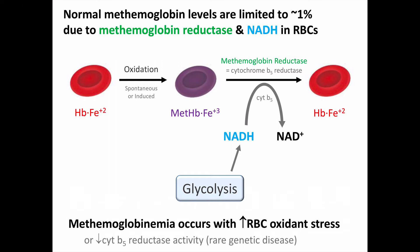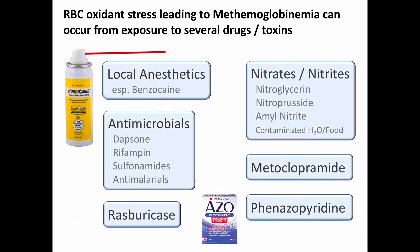If this process normally limits methemoglobin levels to 1%, how do we get higher levels? Most typically, methemoglobinemia is caused by increased oxidant stress, such that the formation of methemoglobin outstrips our ability to reduce it back. It's also possible to have a genetic deficiency of cytochrome B5 reductase, but this is quite rare. The RBC oxidant stress most often occurs with exposure to certain drugs or toxins: local anesthetics, particularly benzocaine; various nitrates and nitrites; certain antimicrobial drugs; the anti-nausea drug metoclopramide (Reglan); phenazopyridine, a urinary anesthetic for UTI dysuria; and rasburicase, a treatment for hyperuricemia used in tumor lysis syndrome.